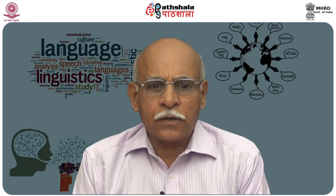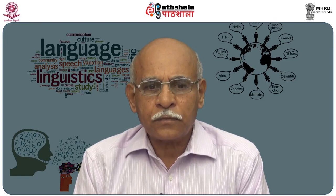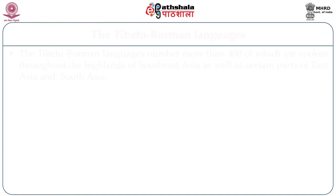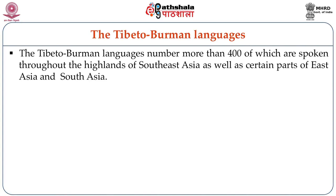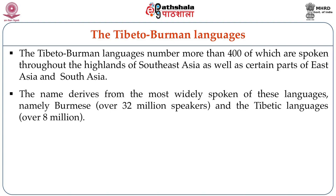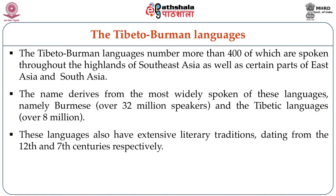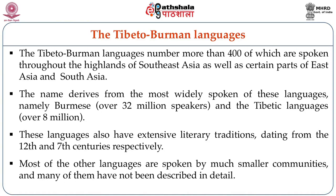Sino-Tibetan languages were known for a long time by the name Indochinese, which is now restricted to the languages of Indochina. Tibeto-Burman languages number more than 400, spoken throughout the highlands of Southeast Asia, as well as certain parts of East Asia and South Asia. The name derives from the most widely spoken of these languages, namely Burmese with over 32 million speakers and Tibetan with over 8 million speakers. These languages also have extensive literary traditions dating from the 12th and 7th centuries respectively. Most of the other languages are spoken by much smaller communities, and many have not been described in detail so far.